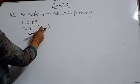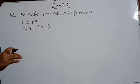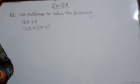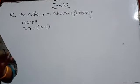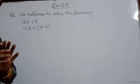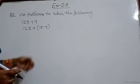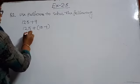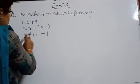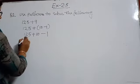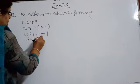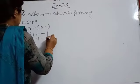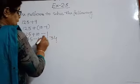For example, I have written 9 as 10 minus 1. In this way you have to write: if 99 is there, you write 100 minus 1. If 102 is there, you write 100 plus 2. If 998 is there, you write 1000 minus 2. Now if we expand, it will become 125 plus 10 minus 1. 125 plus 10 is 135, and 135 minus 1 is 134.